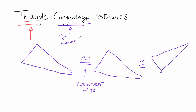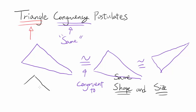For something to be congruent to something else, it has to have the same shape and the same size. So this triangle and this triangle are not congruent — you can denote that by crossing the congruency sign with a bar. Having the same shape is not enough; it also has to have the same size. But once it has the same shape and size, you can rotate it around, as I did with these two triangles. That's what congruency is.